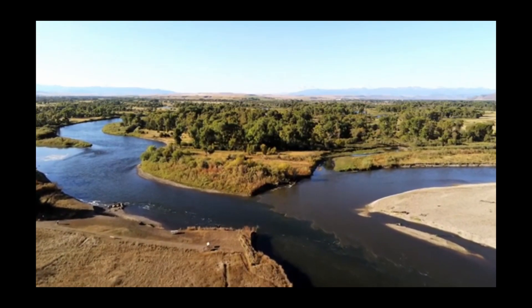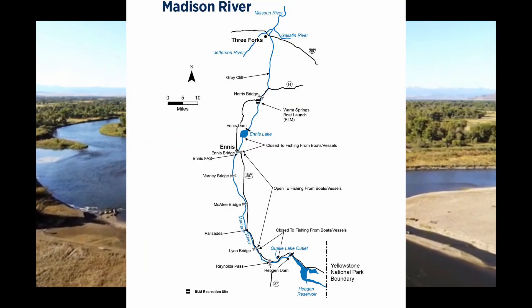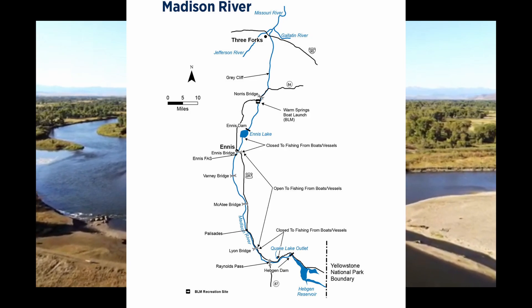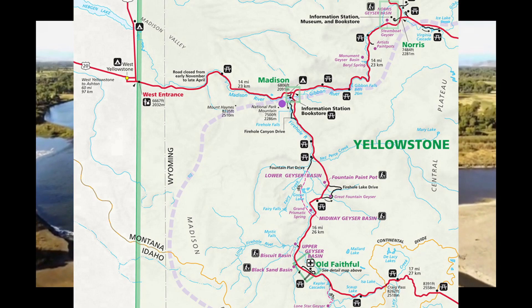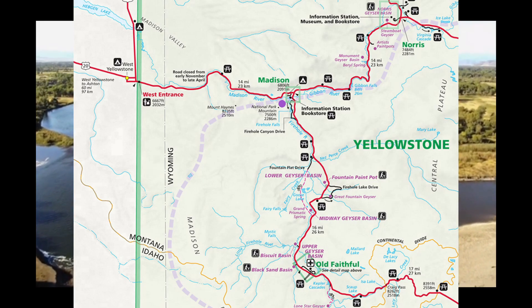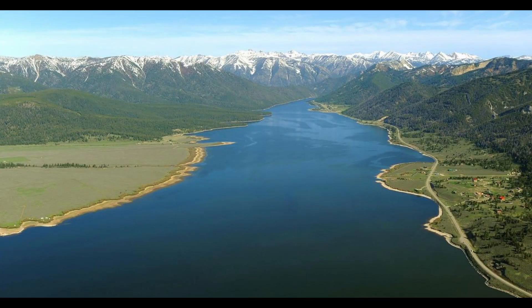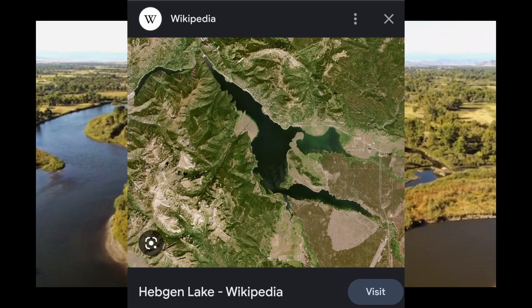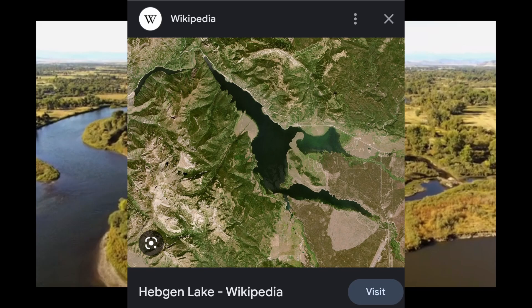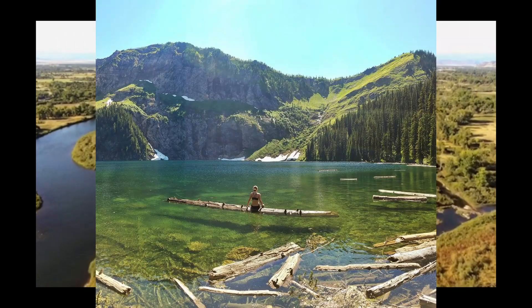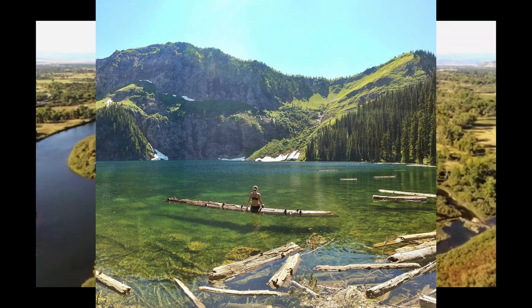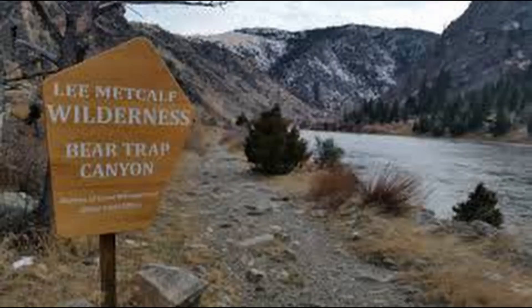Famous for its world-class trout fishing, the Madison River also arises from within Yellowstone National Park, where the Gibbon River and Firehole River meet. The Upper Madison then flows north some 20 miles to man-made Hebgen Lake, then on to nature-made Quake Lake. From there it flows 50 miles to man-made Ennis Lake in Ennis, Montana, after which it flows 40 miles as the lower Madison River to Three Forks, Montana, after cutting through Bear Trap Canyon and the flat terrain south of Three Forks.